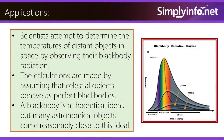Applications: Scientists attempt to determine the temperatures of distant objects in space by observing their blackbody radiation. The calculations are made by assuming that celestial objects behave as perfect blackbodies. A blackbody is a theoretical ideal, but many astronomical objects come reasonably close to this ideal.